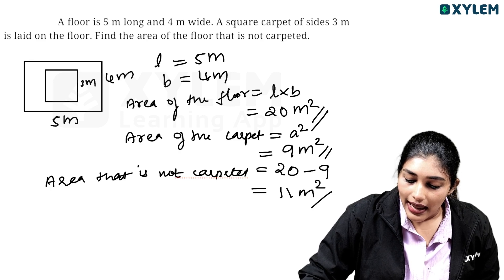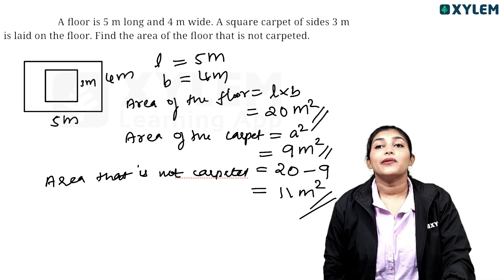The floor area of the floor is 20. Carpeted area is 9 minus. This is 11 square meter. 11 square meter.